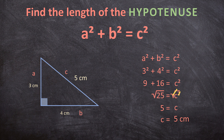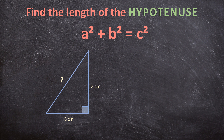Let's look at another example. We have a right triangle where the hypotenuse is opposite the right angle. First we name our sides A, B, and C — C is always the hypotenuse. The formula is A squared plus B squared equals C squared. Now we fill in the values: A is 8, so 8 squared, plus B is 6, so 6 squared, equals C squared.